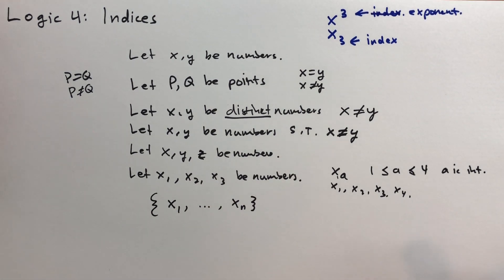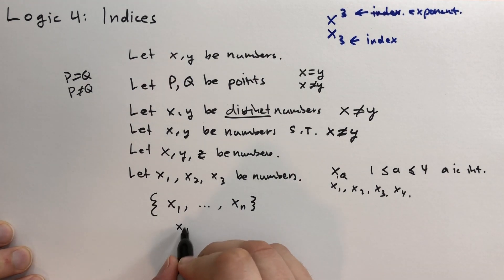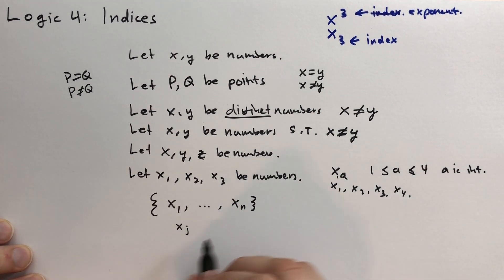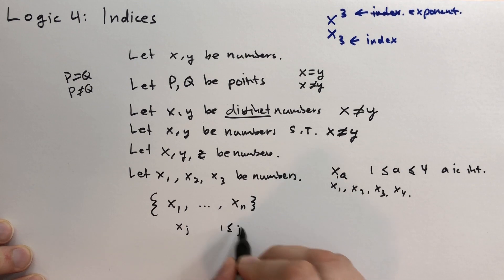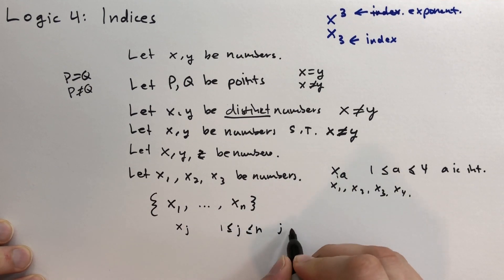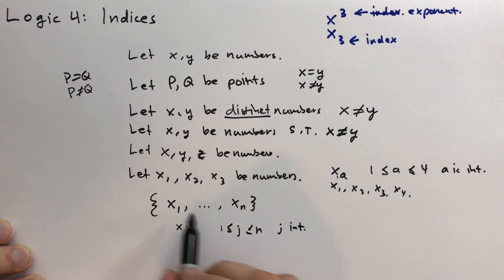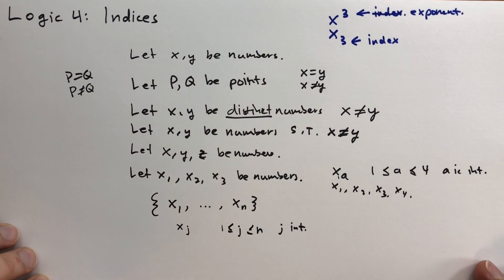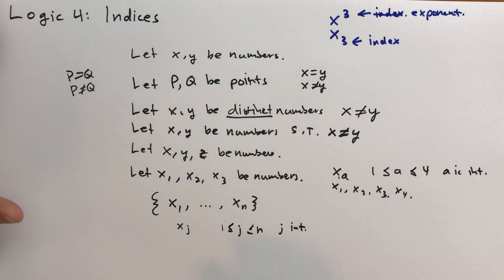If you studied chemistry at all, you'll know that when you're studying the electrons valence, this is the kind of notation you'll see people using there. And they would say like xj is one of these numbers, where 1 is less than or equal to j is less than or equal to n, and j is an int. It's assumed that when it's a subscript, it's an integer, right?